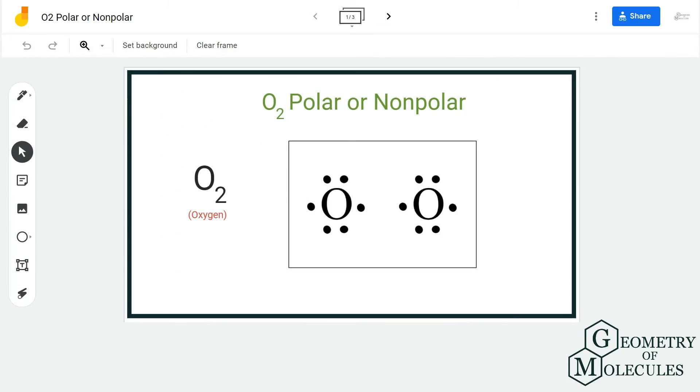Hi guys, welcome back to our channel. In today's video, we are going to help you determine the polarity of O2 molecule. Now, O2 is a chemical formula for oxygen gas, and to determine its polarity, we need to look at its Lewis structure.